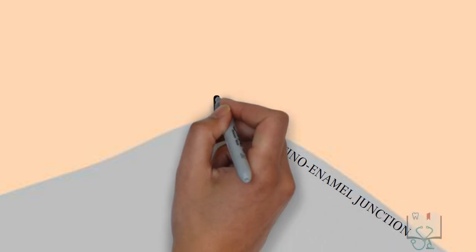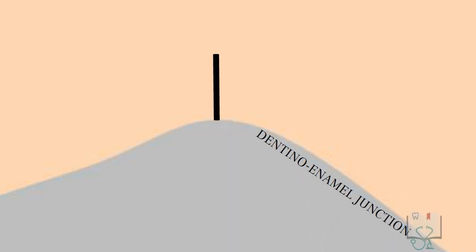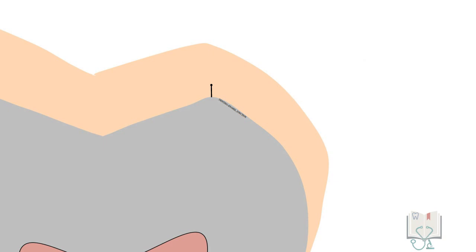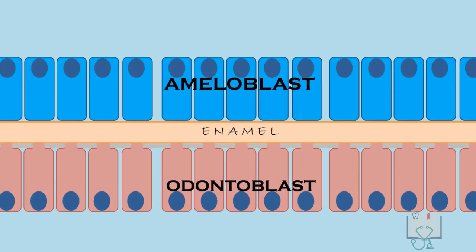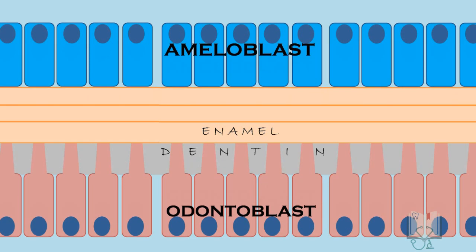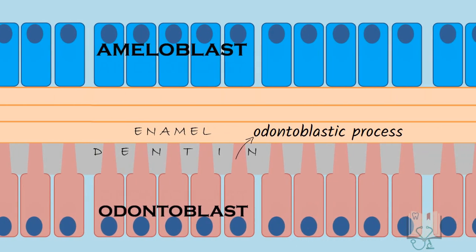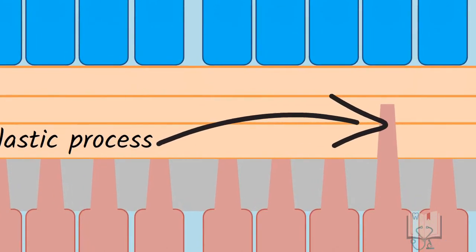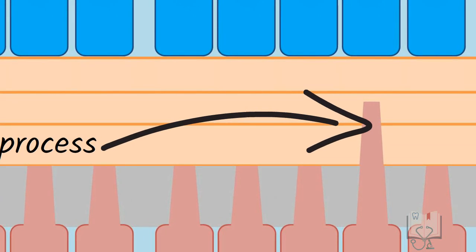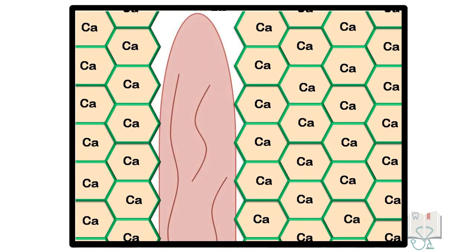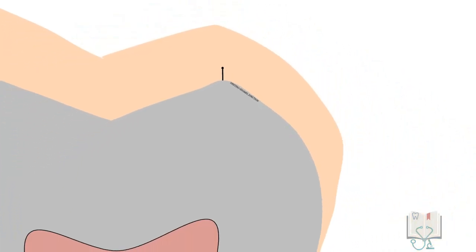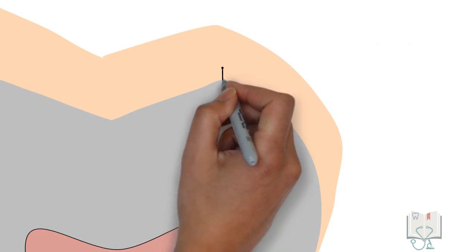Enamel spindles are individual straight vertical lines originating from the dentino-enamel junction running perpendicularly for a short distance. They may be slightly thickened at their end and are more common in cusp areas. Enamel spindles are formed during tooth development when amelogenesis and dentinogenesis are occurring simultaneously. As odontoblasts deposit dentine they move backwards, leaving an extension of odontoblastic processes. If any odontoblastic process crosses the dentino-enamel junction it gets incorporated into the developing enamel. Hence, an enamel spindle is a hypocalcified area containing an odontoblastic process. They are perpendicular to the dentino-enamel junction because odontoblastic processes themselves are perpendicular to it.